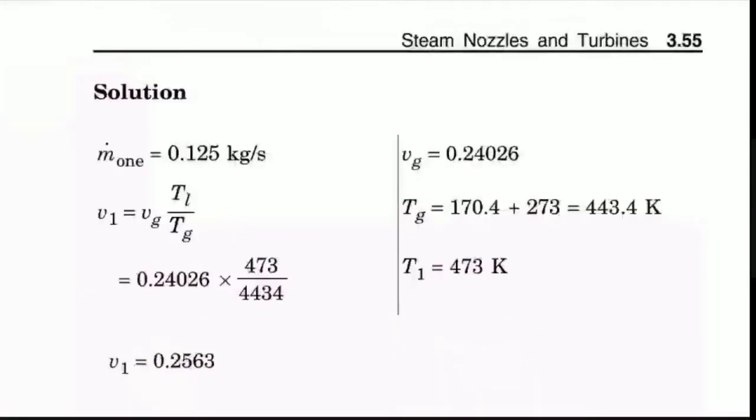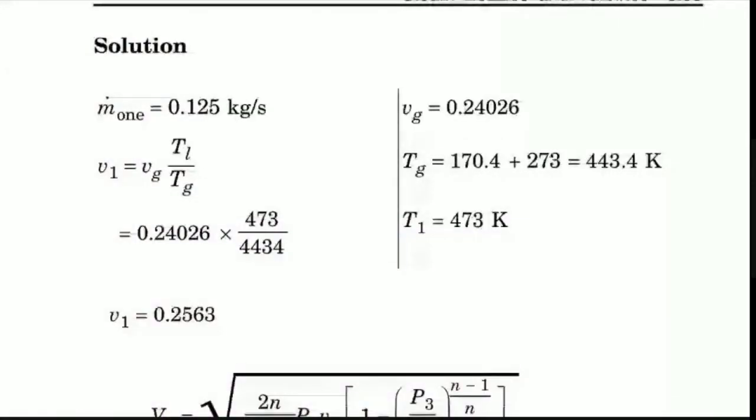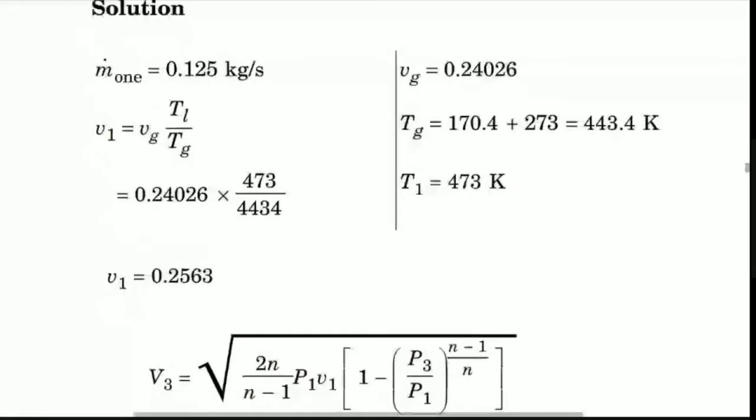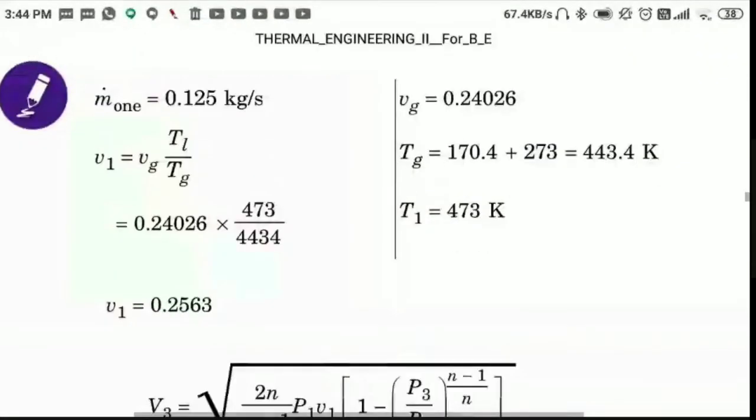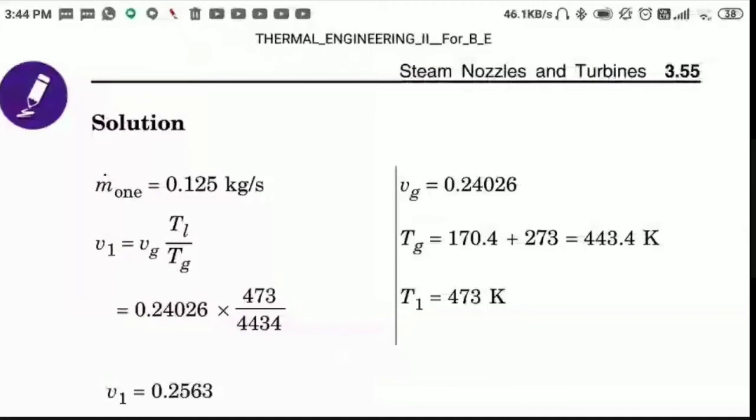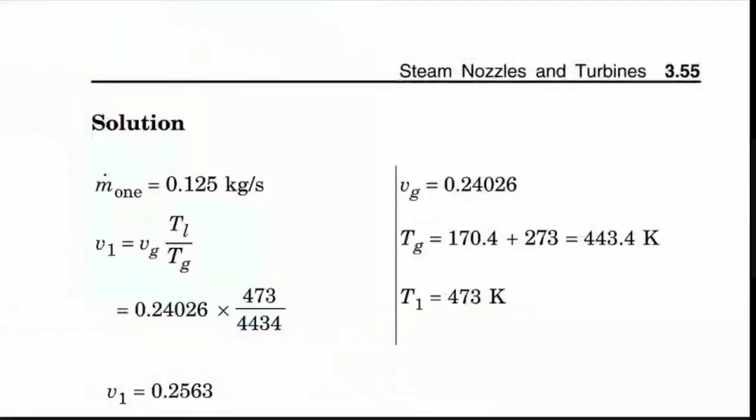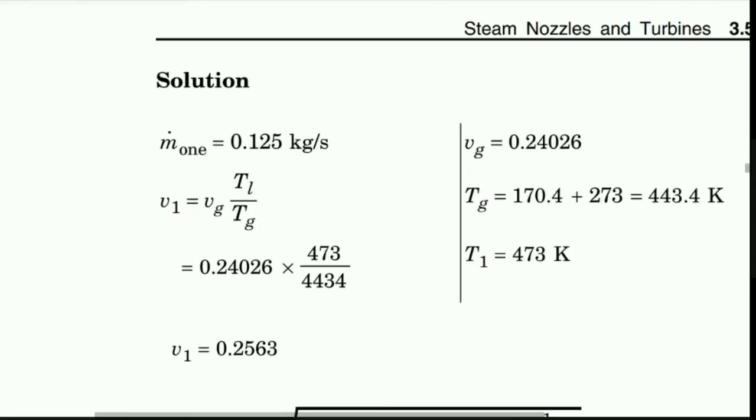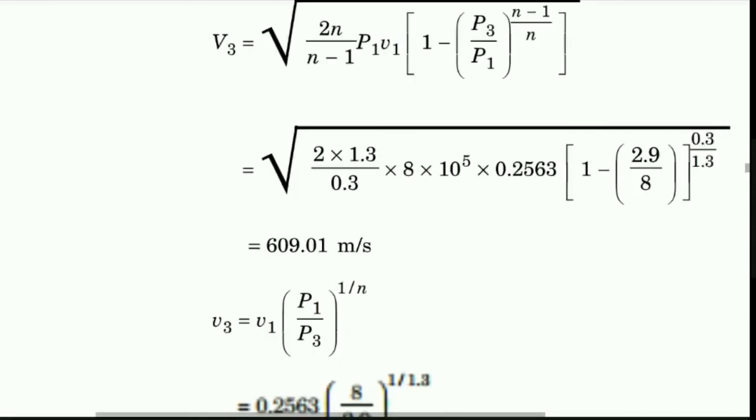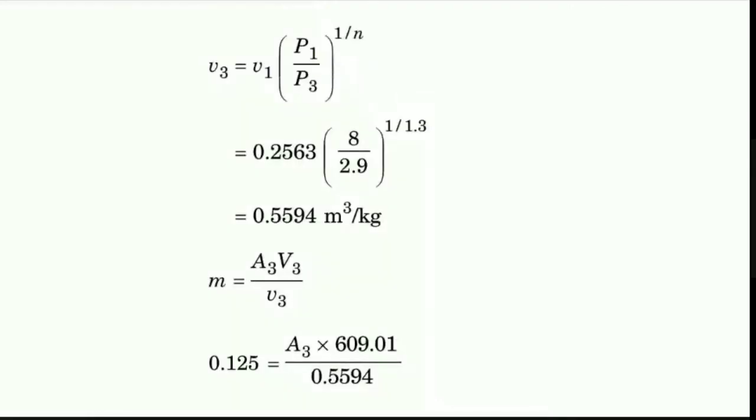VG, TG, and the other properties are available from steam tables. At 8 bar, we get VG and VS from the tables. How do we find V1? We need to calculate V3 using the mass equation involving area A3.